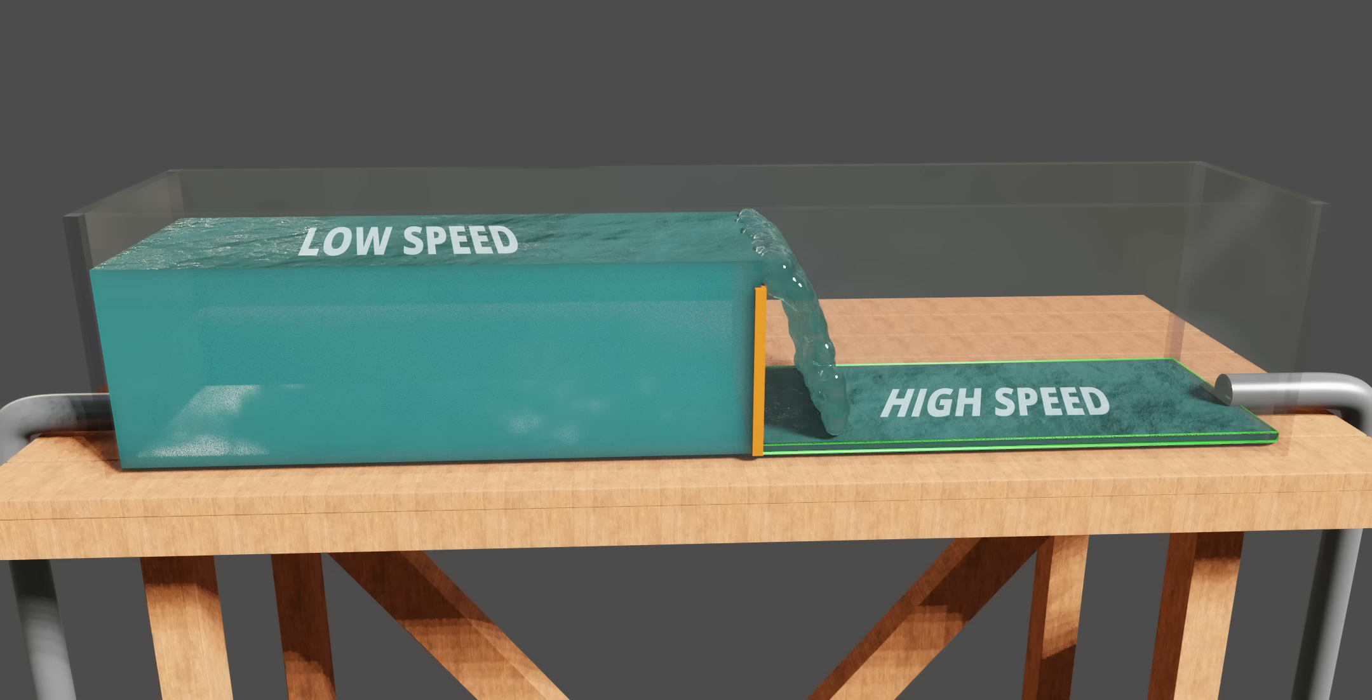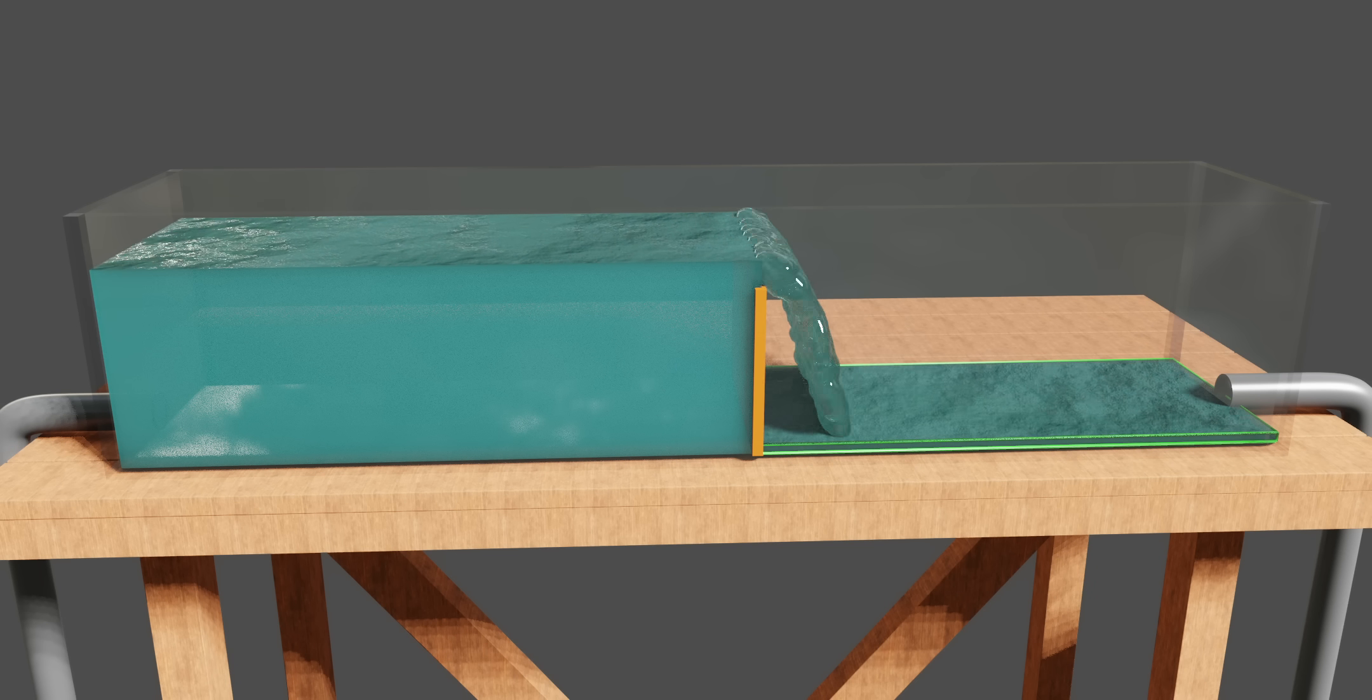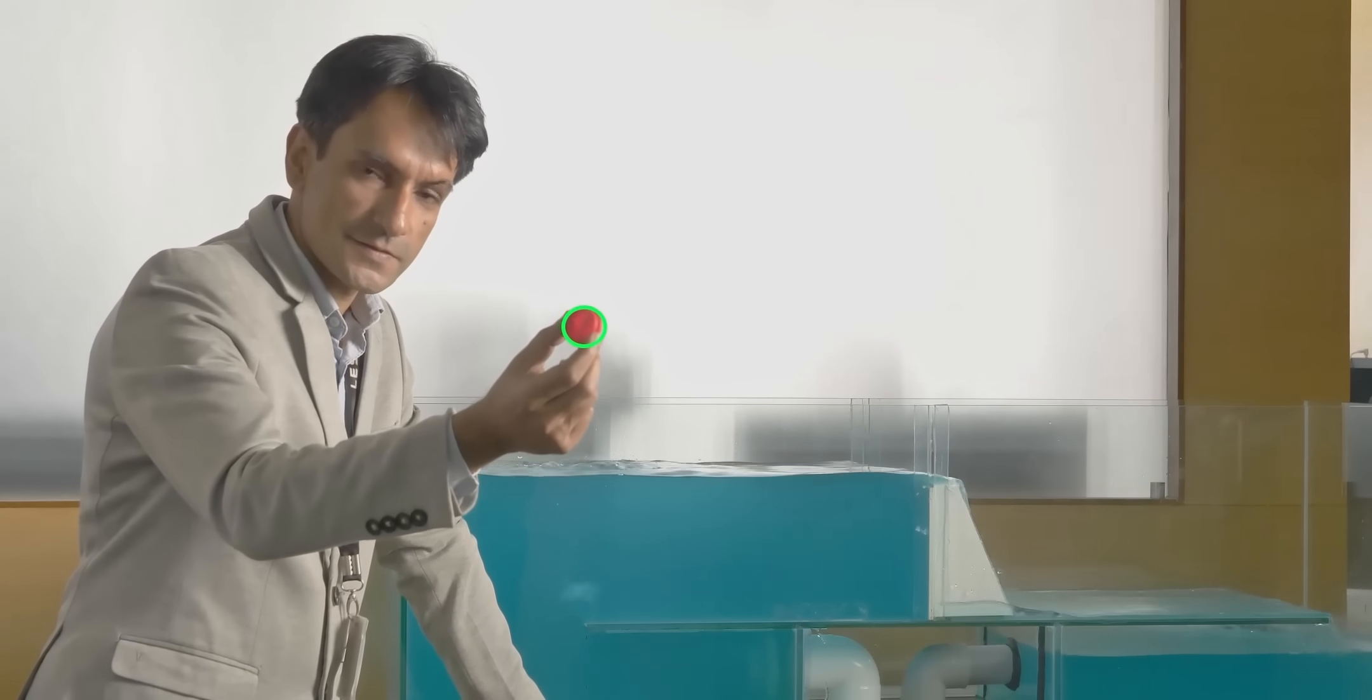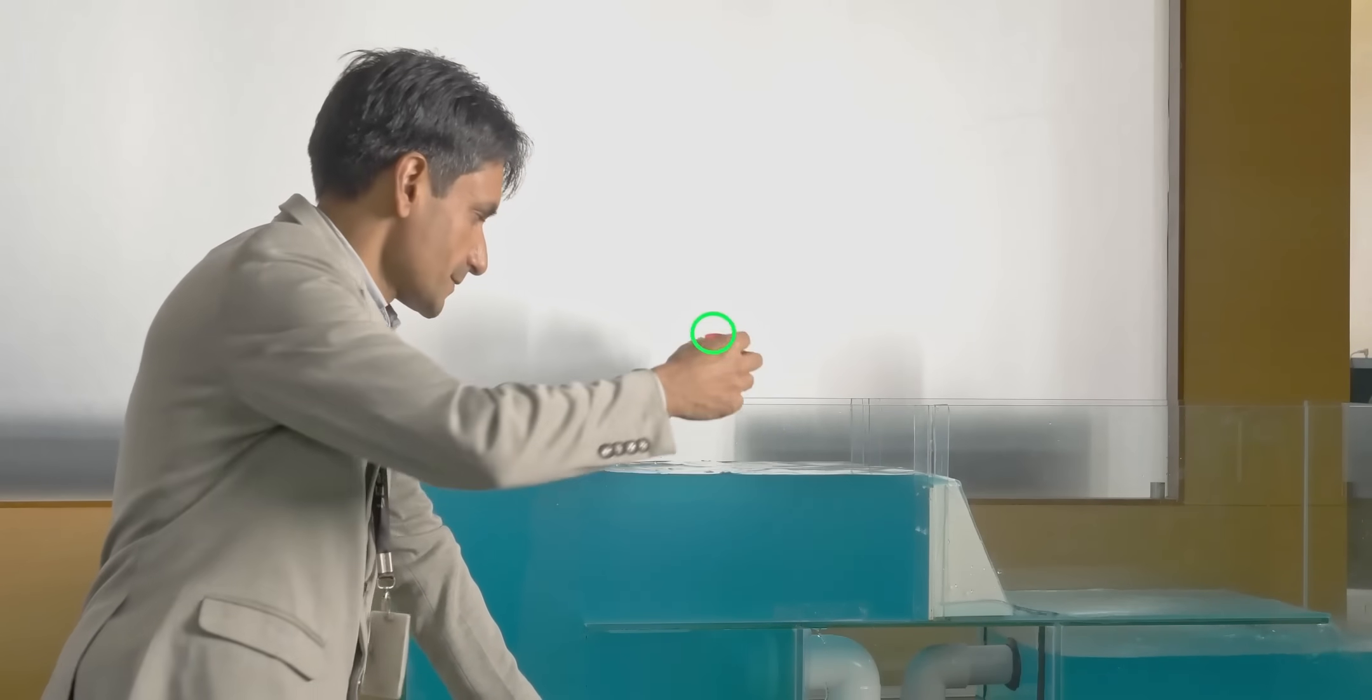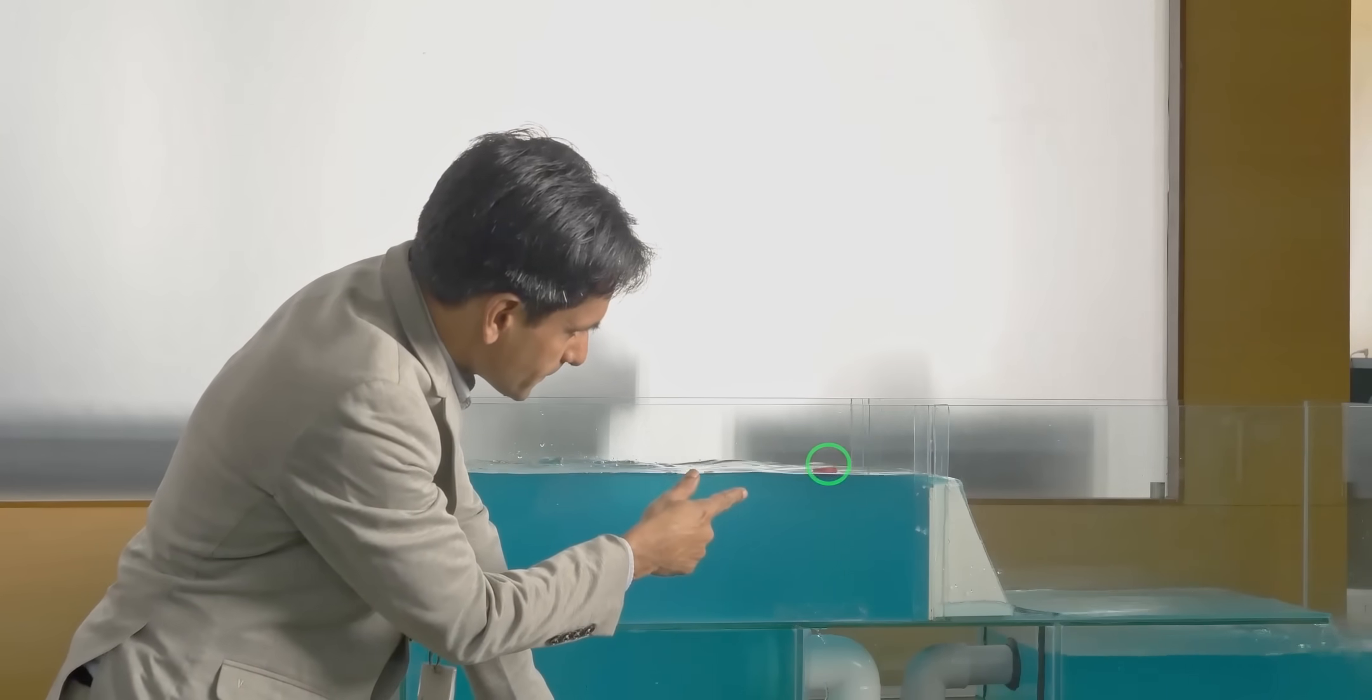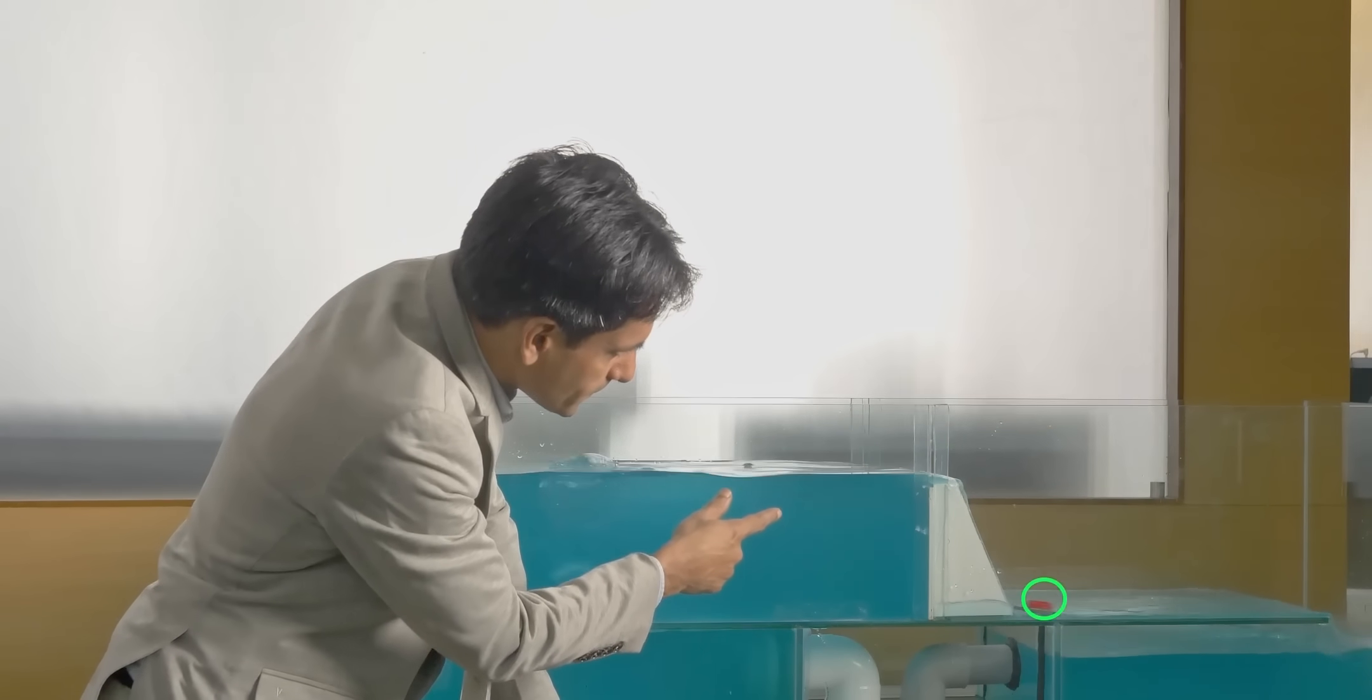This seems wild, even though we've proven it logically. Let's test it practically so maybe it will be more believable. This floating object is moving slowly before the weir and speeds up greatly after the weir.